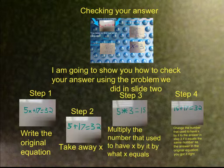Step 2: Take x away. Step 3: Multiply the number that used to have x by it by what x equals.